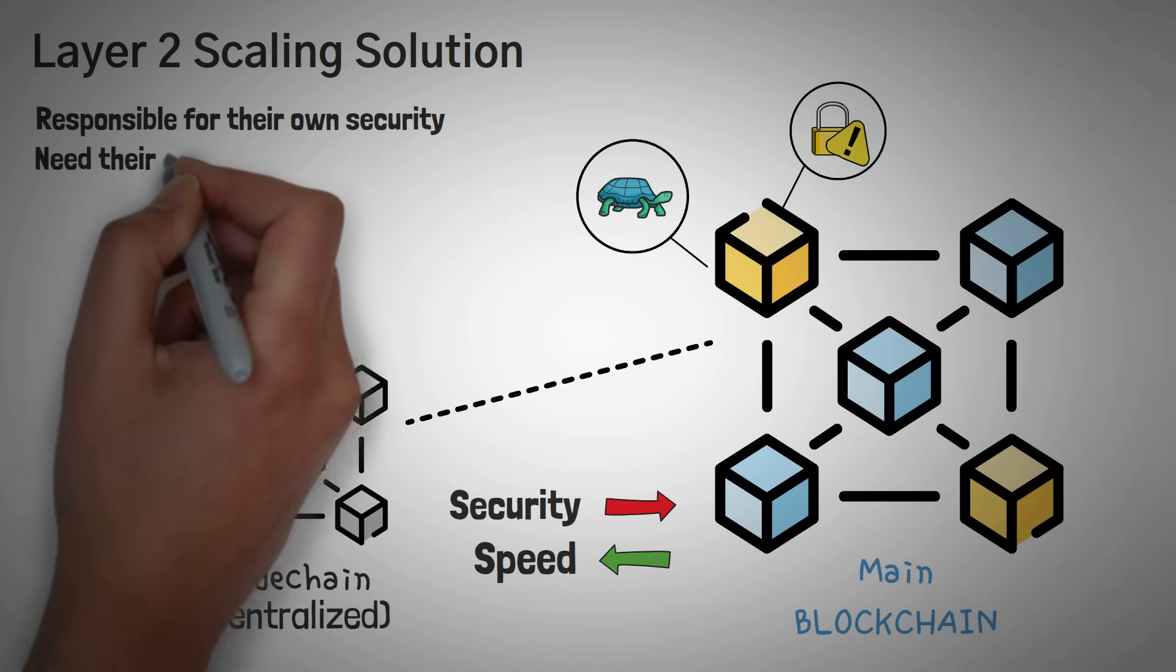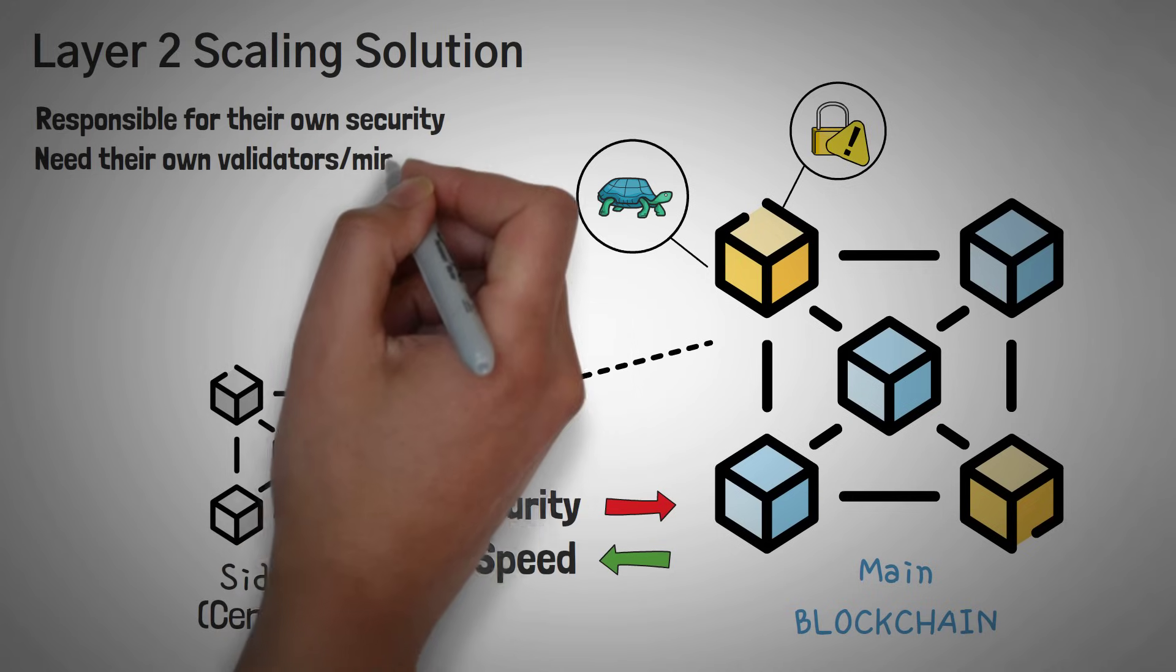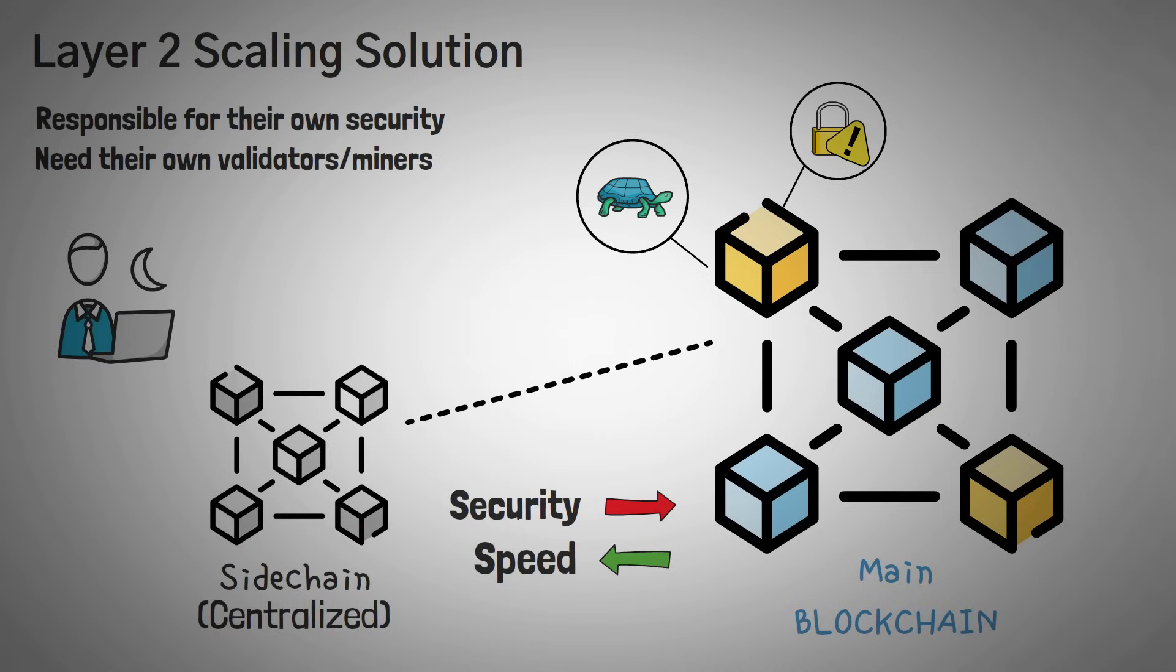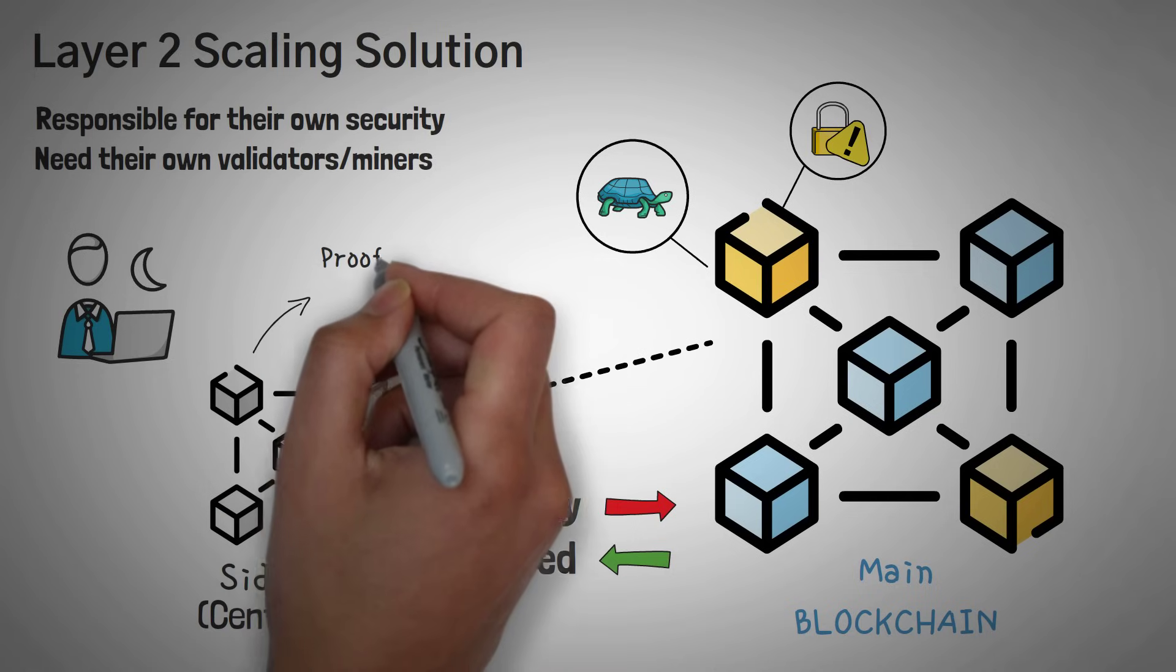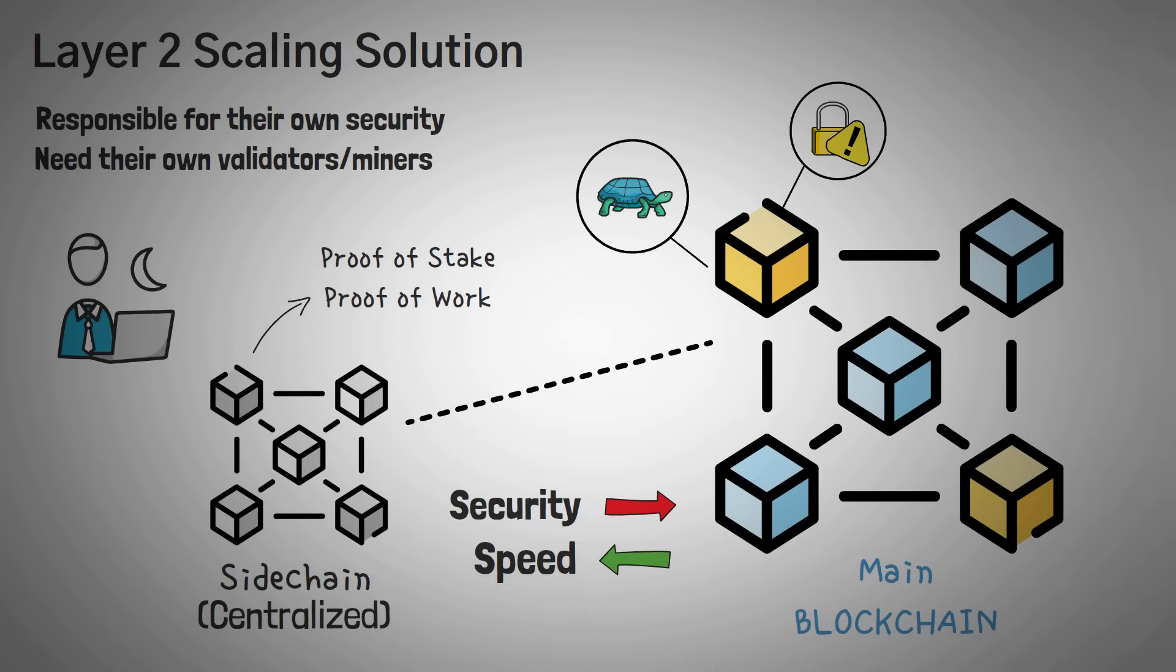Another point is that sidechains need their own validators or miners. They can even have their own consensus mechanisms, meaning if they wanted to, they could use proof of stake or proof of work, or something as crazy as proof of space and time. Validators or miners usually earn rewards for their work in a sidechain in the same manner that all other blockchains work.